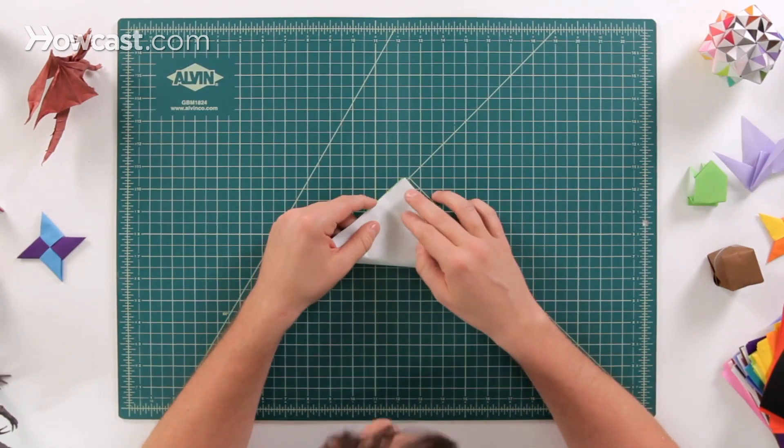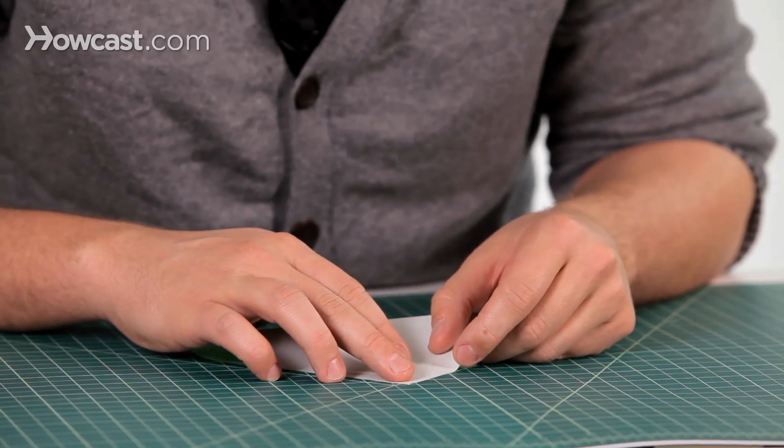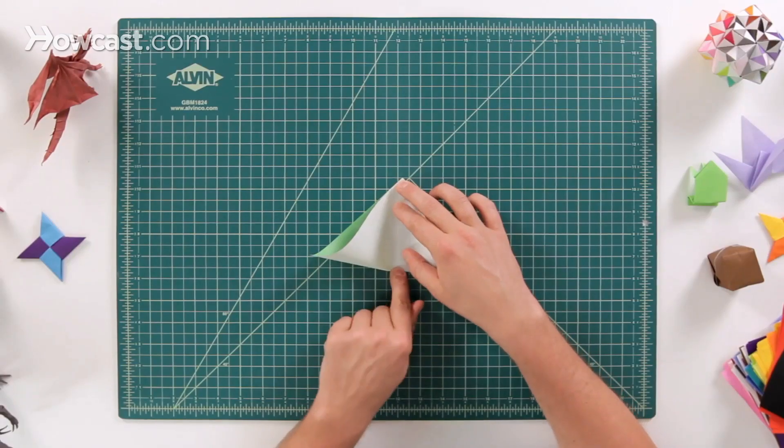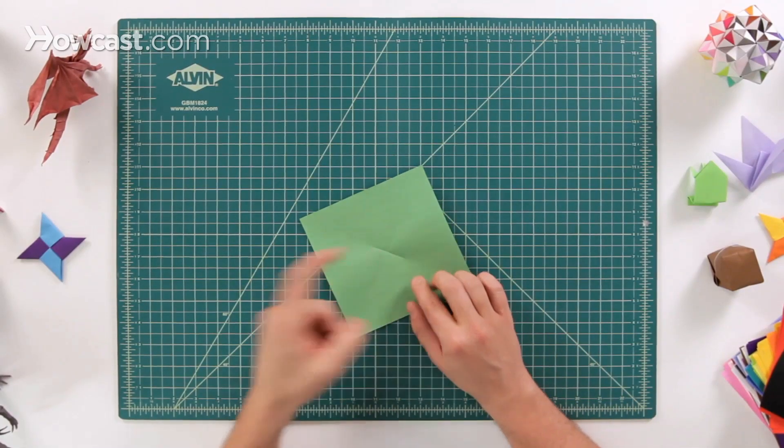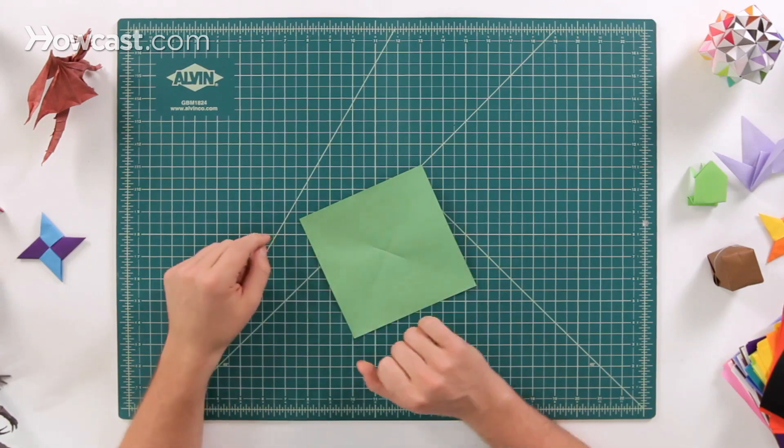And then do the same thing on the other side. Go ahead and find the other diagonal fold. Get it nice and lined up. And then just make a little crease right there. And the only part that's important is right where they intersect. That's the exact middle of the paper.